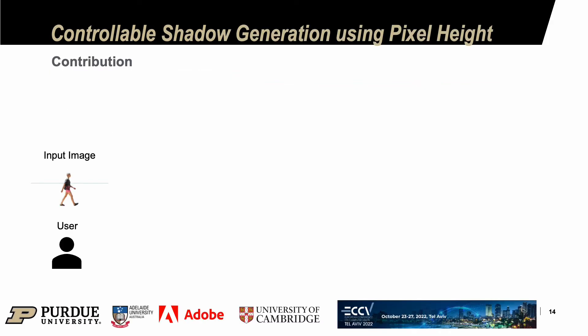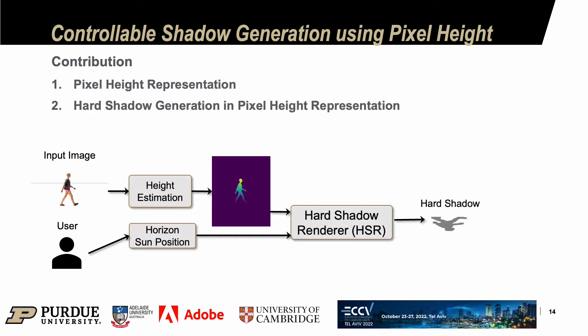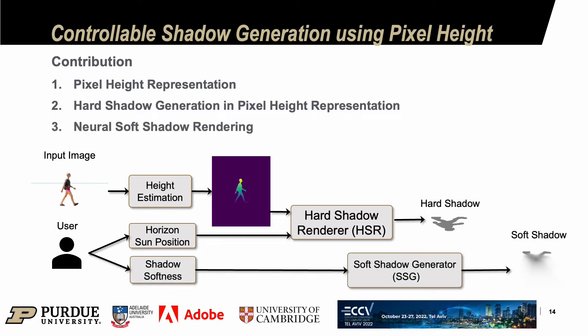To summarize the contributions: first, we propose a new 2.5D representation called pixel height. Then we further propose a hard shadow renderer in the pixel height representation. We further show it is beneficial to use a neural network to render soft shadows.